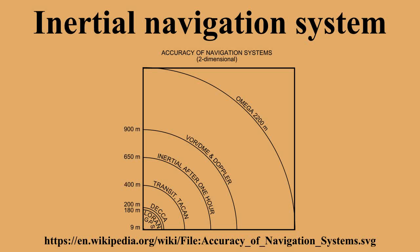An INS can detect a change in its geographic position, velocity, and orientation by measuring the linear acceleration and angular velocity applied to the system. Since it requires no external reference, it is immune to jamming and deception.